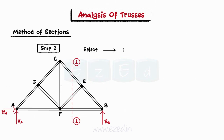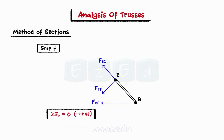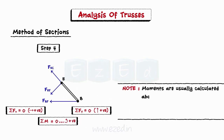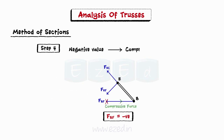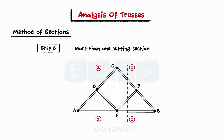Select any one of the two parts and then isolate it from the truss. Assume that all members to be analyzed carry tensile forces. We will now apply all three conditions of equilibrium to the isolated part to get forces in the desired members: sum of all forces in the x direction is zero, sum of all forces in the y direction is zero, and sum of moments of all forces is zero. Kindly note that moments are usually calculated about a point where two forces meet in order to find the third force. If any value calculated is found to be negative, it implies that the assumption was incorrect and that particular member carries compressive force and not tensile force.